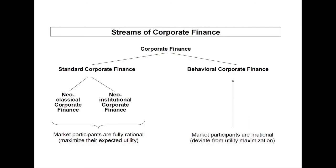Summing up, this audio slide gave an overview of how to structure the field of corporate finance. As corporate finance is a subtopic of finance, the structure is very similar to the structure of finance. All together, there are three different streams of corporate finance: neoclassical corporate finance and neo-institutional corporate finance, both under the umbrella term standard corporate finance, as well as behavioral corporate finance. Moreover, I presented the differences between these three streams of corporate finance with respect to their assumptions.